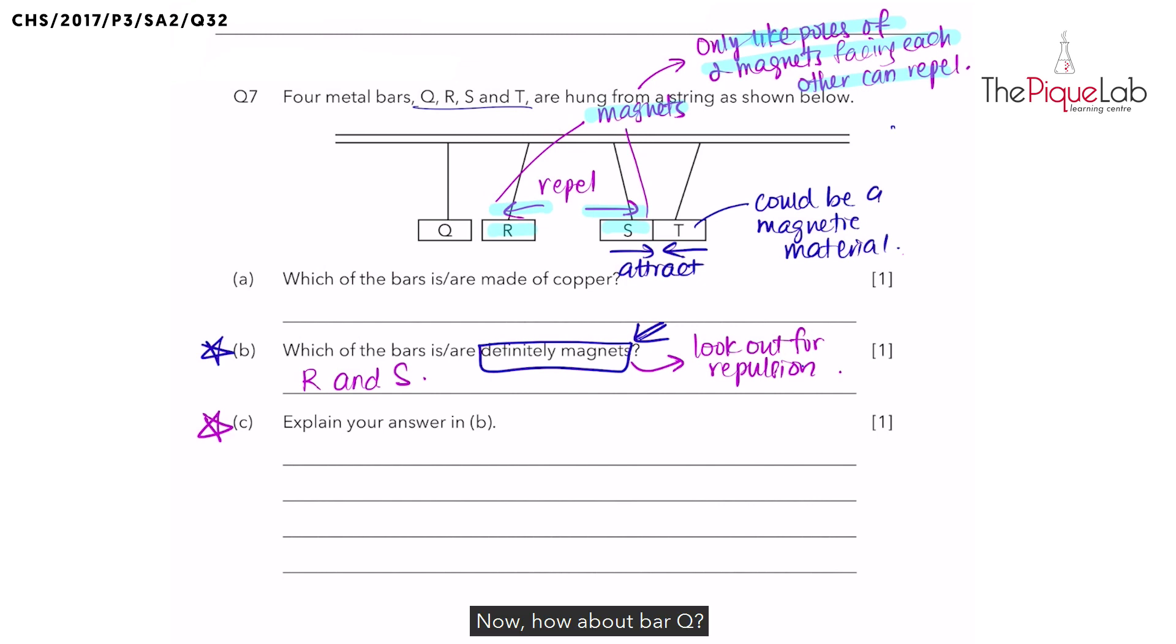Now, how about bar Q? If you look at Q closely, Q is not moving away, neither is it moving towards. In fact, there is no interaction at all, which means it did not attract nor repel. Hence, is it a magnet? No. Is it a magnetic material? No. Remember, if it was a magnetic material, it would have been attracted to bar R, which is a magnet. Since Q did not get attracted to R, it has to be a non-magnetic material.